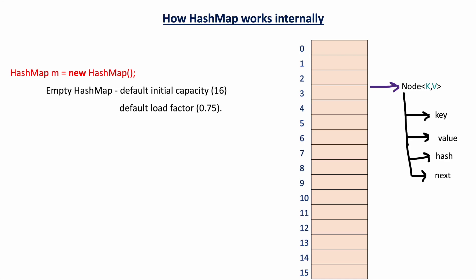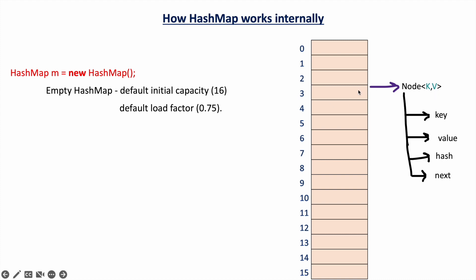Each node, also called an entry, has four fields: key, value, hash, and next. Key stores the inserted key, value stores its corresponding value, hash stores the hash code of the key, and next points to the next node in the bucket. A bucket may contain a single element or a list of elements. The array of buckets can be called the table array, node array, or entry array.